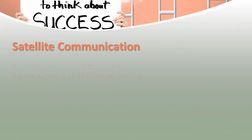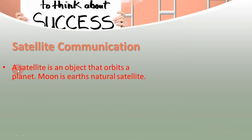Satellite communication. A satellite is an object that orbits a planet. Our planet Earth has an object that revolves around it, the moon. The moon is Earth's natural satellite.